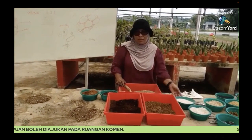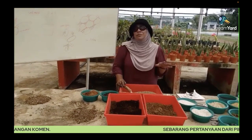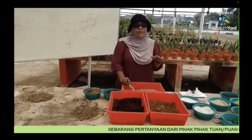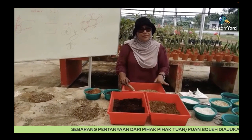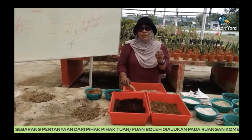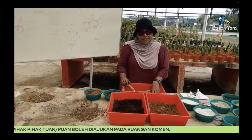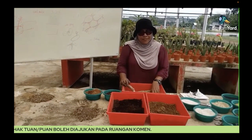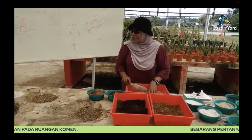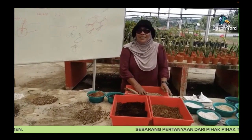Sebab kalau pH tak tersuai dalam range 6.5 to 7.5, akar takkan boleh mengambil nutrien sebab pH dia tak sesuai. Itu sahaja daripada saya. Saya harap ianya bermanfaat untuk semua orang. Terima kasih.